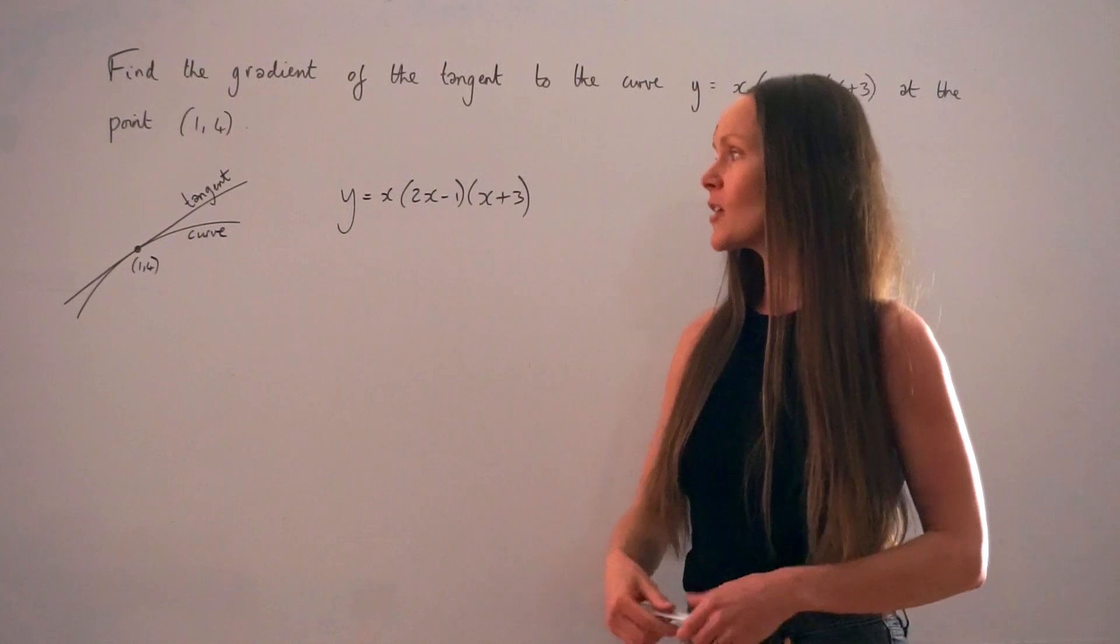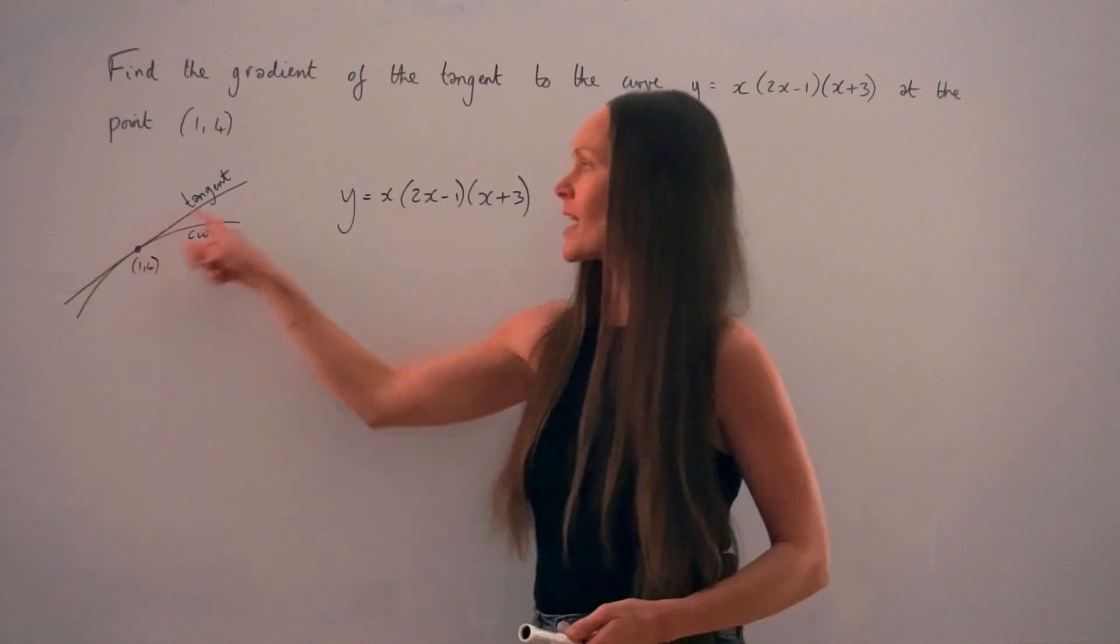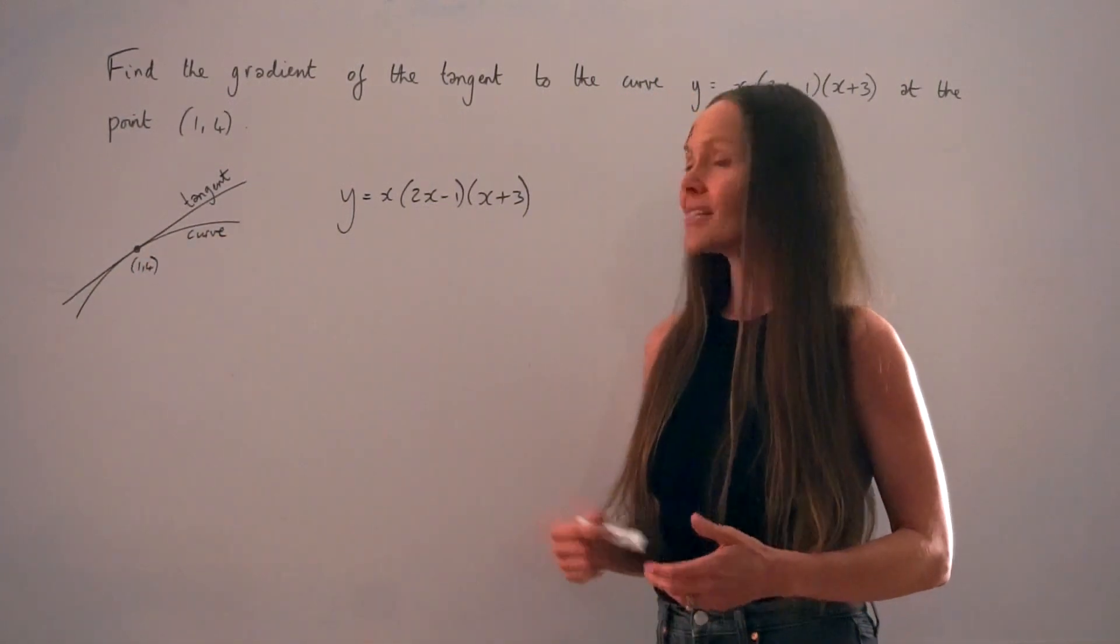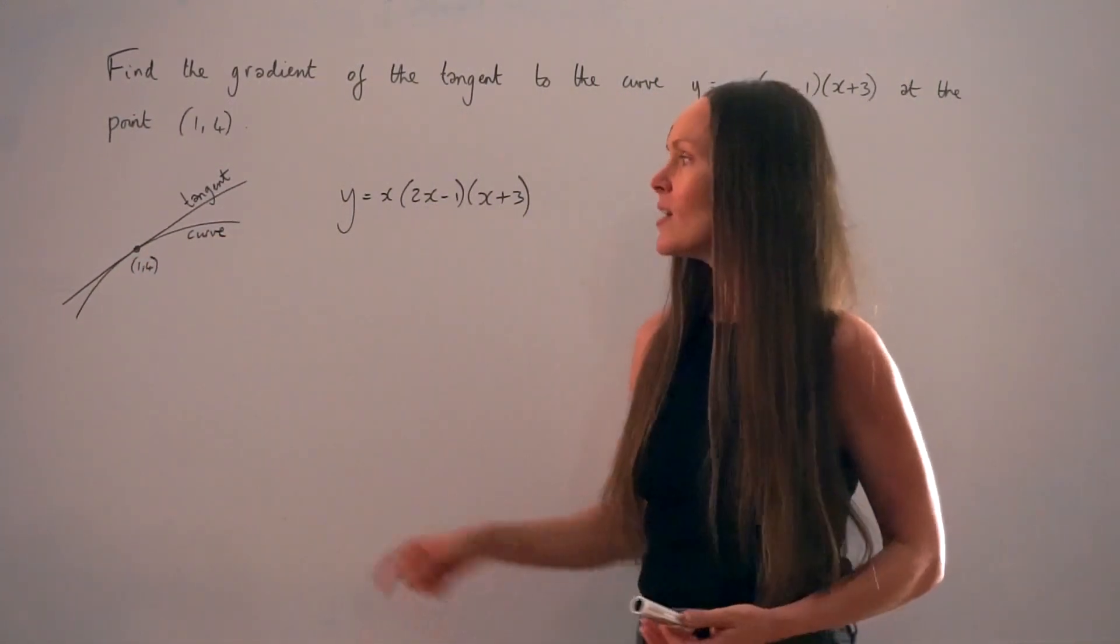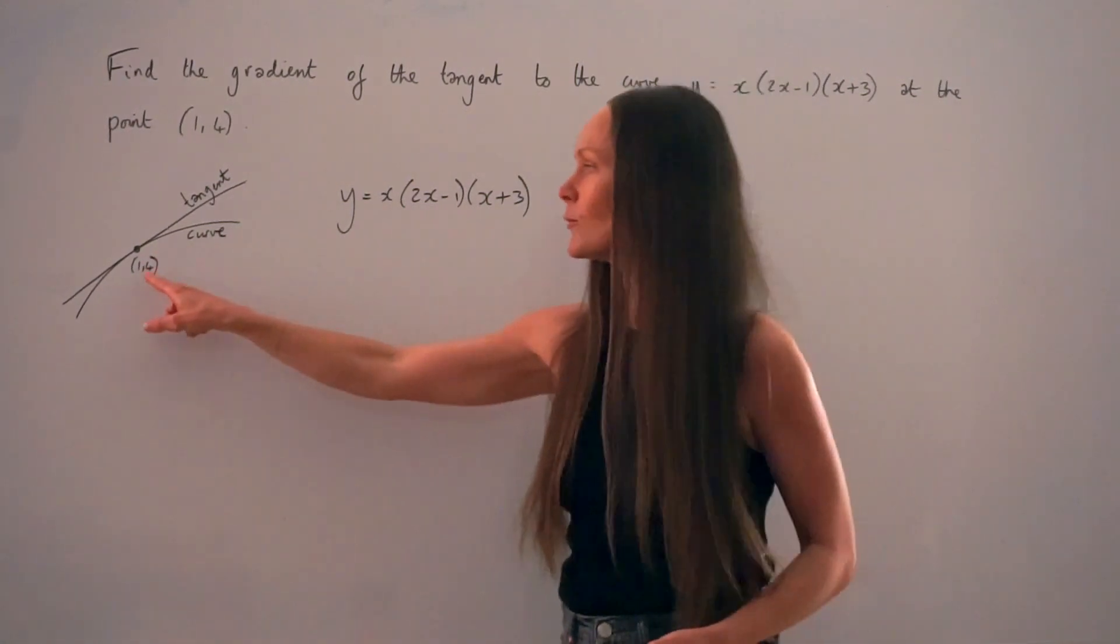So what I've just done over here is a quick sketch, just so you can visualize better what's going on, of a curve with a tangent. Now the tangent is just a straight line that touches the curve in one place, so in this question they intersect at the point (1,4).